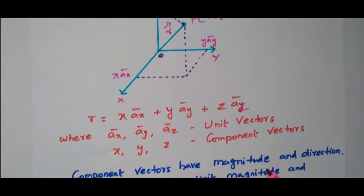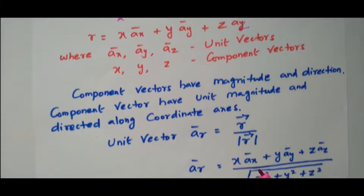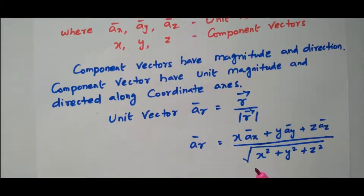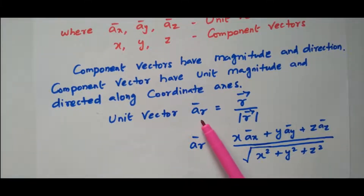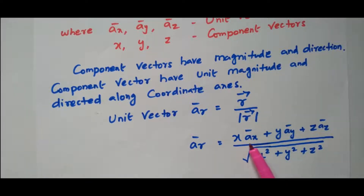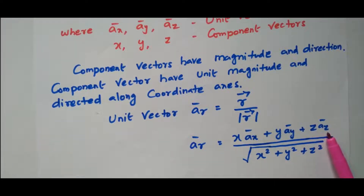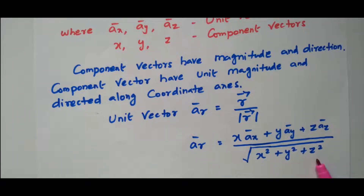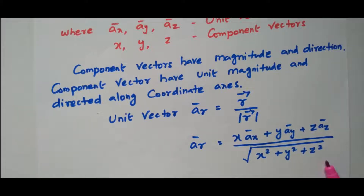Now we will see how to represent the unit vector. The unit vector is nothing but the vector divided by its scalar magnitude: r-hat = r-vector / r. The r-vector is x·ax + y·ay + z·az, and the scalar r is represented as the square root of x² + y² + z². So the unit vector is represented as vector divided by scalar.